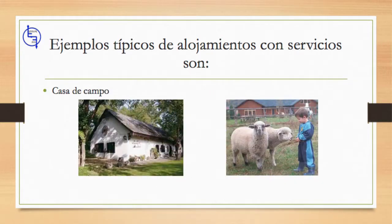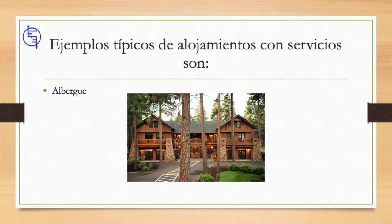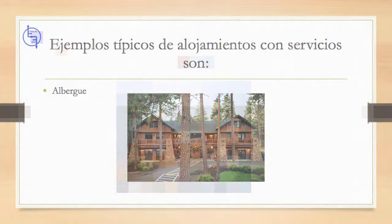Una casa de campo es una gran casa tradicional en el campo, especialmente una que ha pertenecido a la misma familia durante muchos años. La casa de la granja es la casa principal de una granja donde vive el granjero. Las casas de campo están al aire libre en la naturaleza o, de alguna manera, están afiliadas a un parque o entorno natural.